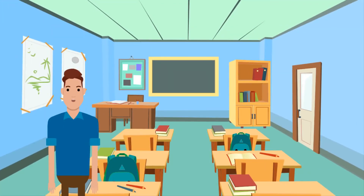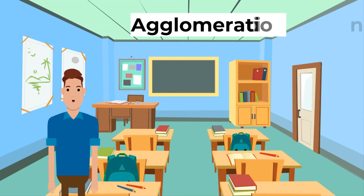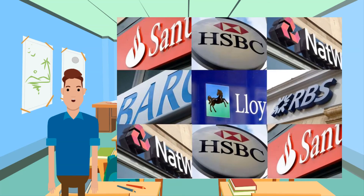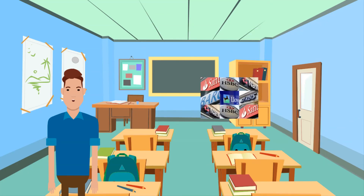There are two special cases of industrial location. Agglomeration is when a number of producers in the same or related industries group themselves together. They do this to benefit from local skill pools, economies of scale, or the prowess of a locality in a particular field. An example is a large number of financial services companies — for example, banks and insurance companies — which are headquartered in the City of London.